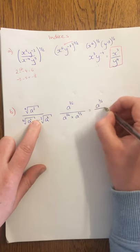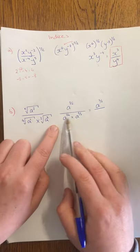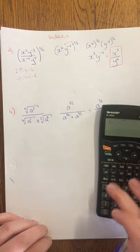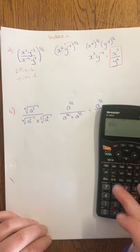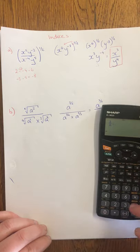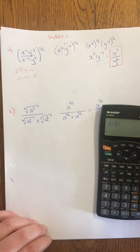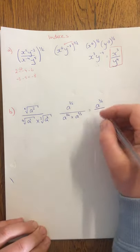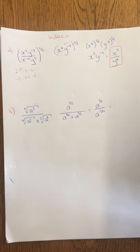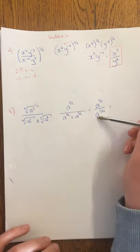8 to the power of 3 over 2 divided by, so when you're multiplying, add the powers. So it's going to be a quarter plus 2 thirds. A quarter plus 2 thirds gives me 11 over 12. So it's 8 to the power of 11 over 12.